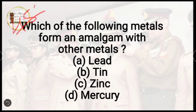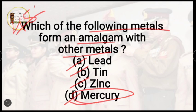Question number 45: which of the following metals forms an amalgam with other metals? Options are lead, tin, zinc, or mercury. The correct answer is option D, mercury.